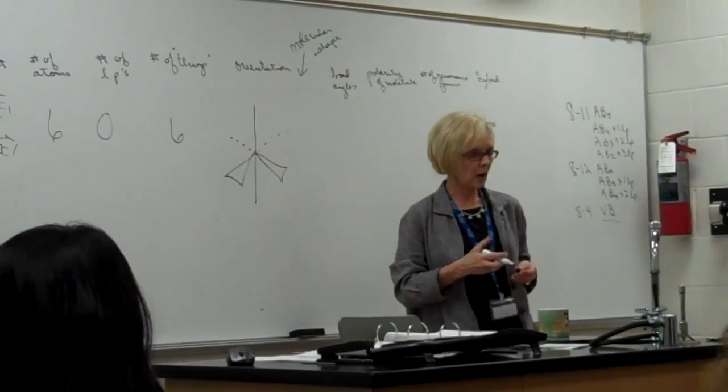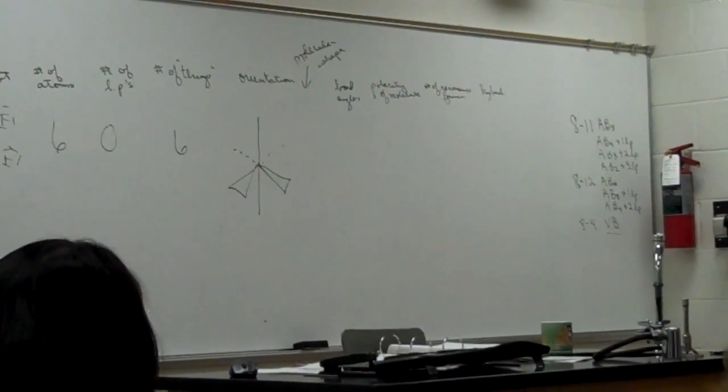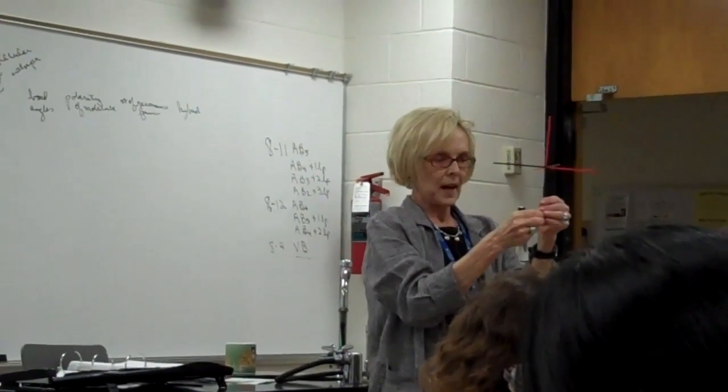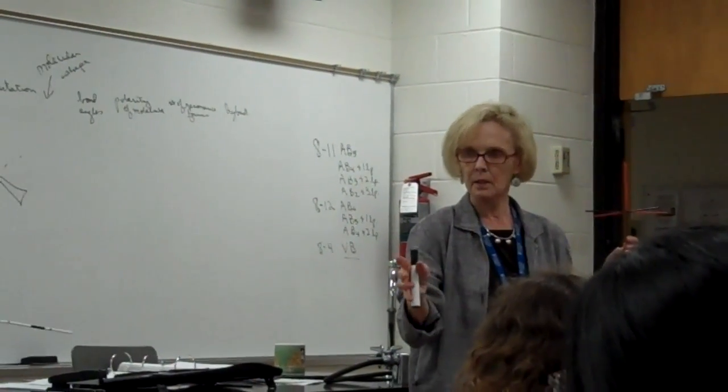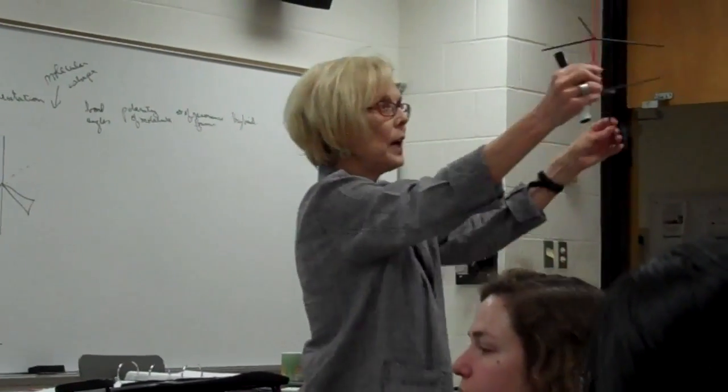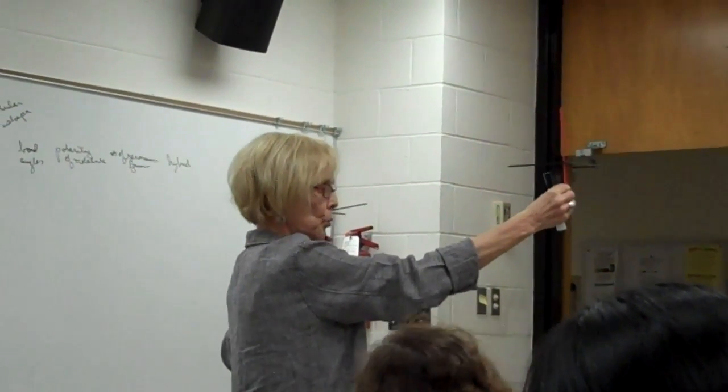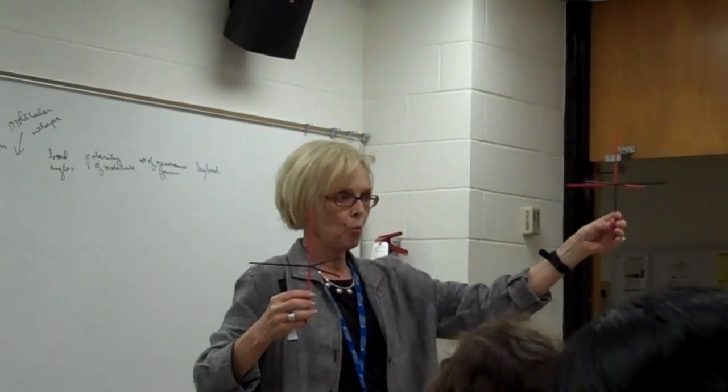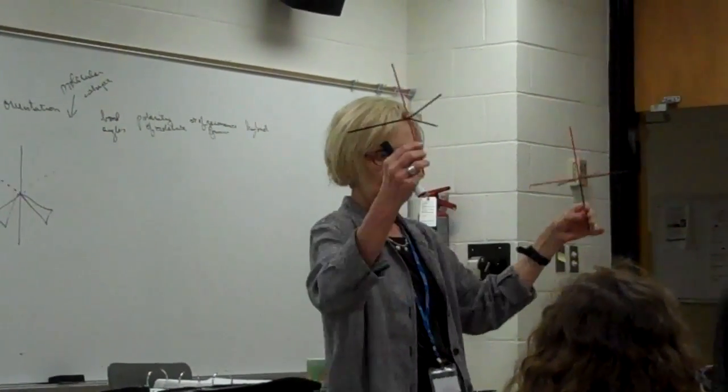And here's my generic octahedron. Have you built one? Does somebody have one handy? She's used a variety of colors, and that's just fine. But we have an up, and we have a down, and we have four in the plane. Does anybody have a trigonal bipyramid handy? Look at the difference. Here's when you have five. We have one up, one down, and three in the plane. Here we have one up, one down, but we have expanded the plane to do four.